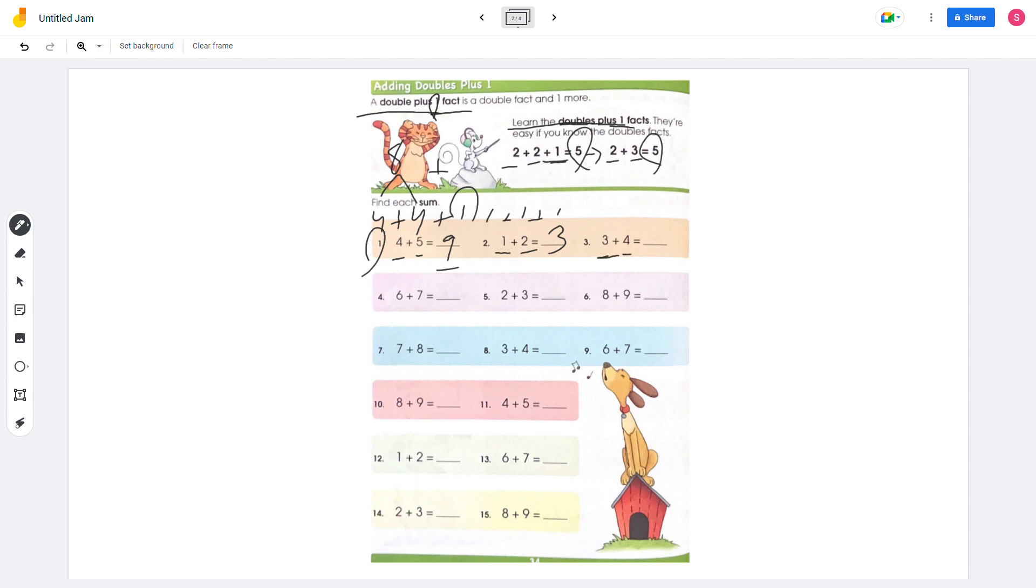3 plus 4, which is 3 plus 3 plus 1. And 3 plus 3 is 6, plus 1 is 7. Number 4, we have 6 plus 7, which is 6 plus 6 plus 1. And 6 plus 6 equals 12, and plus 1 is 13.